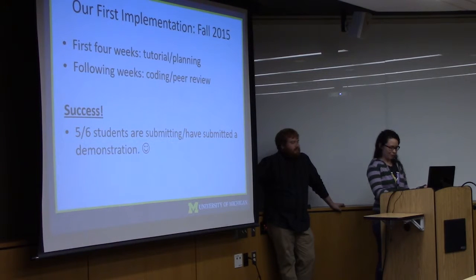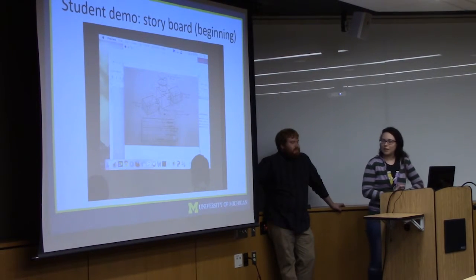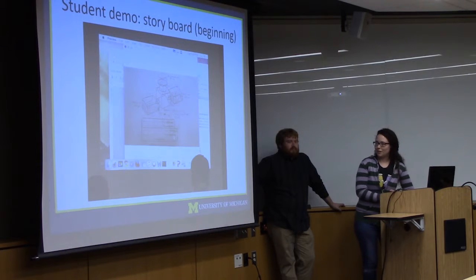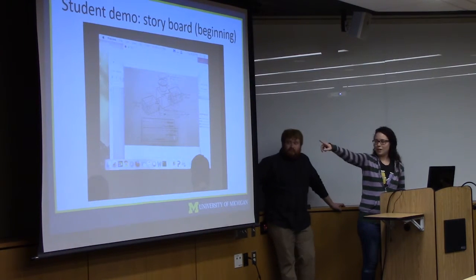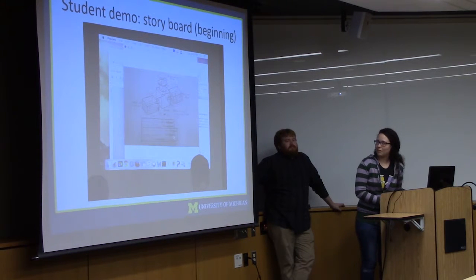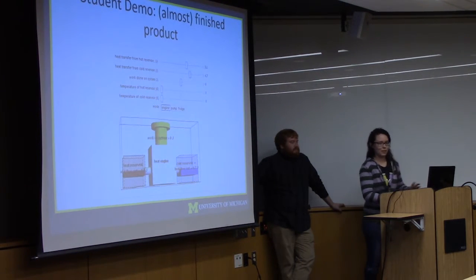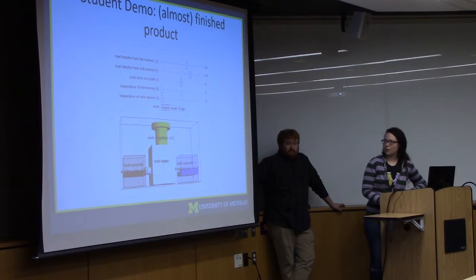I'm going to show you an example of something a student made. One student wanted to make a demonstration showing a heat engine. He presented his plan to the class — he drew up what he wanted to make, including what sliders he was going to have. This isn't his finished product, but this is basically what he's going to submit either this week or next week. Hopefully you'll see it on the Wolfram Demonstrations site pretty soon.